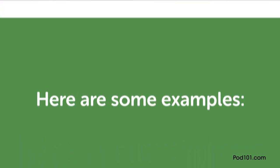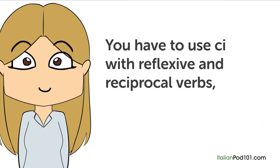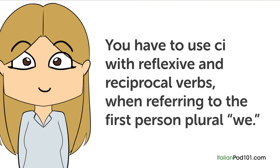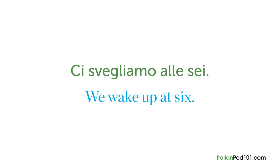You have to use CI with reflexive and reciprocal verbs when referring to the first person plural 'we.' Consider the reflexive verb 'svegliarsi' — to wake up. 'We wake up at 6' in Italian is 'ci svegliamo alle sei.' Another example with 'iscriversi,' which means 'to enroll': 'We enrolled at the university.' An example of CI used with a reciprocal verb is the well-known expression 'ci vediamo,' meaning 'see you soon' but literally 'we'll see each other.'